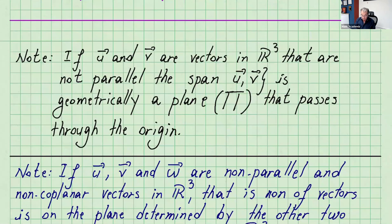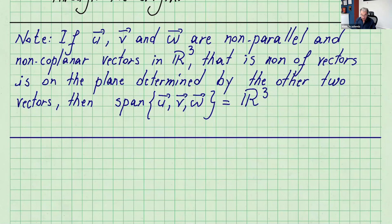Note: if u and v are vectors in R3 that are non-parallel, the span of u and v is geometrically a plane that passes through the origin. Remember, the span of two non-parallel or non-coplanar vectors in R3 is a plane through the origin. If u, v, and w are non-parallel and non-coplanar vectors in R3, then it's obvious the span of those three vectors is going to be the entire R3.